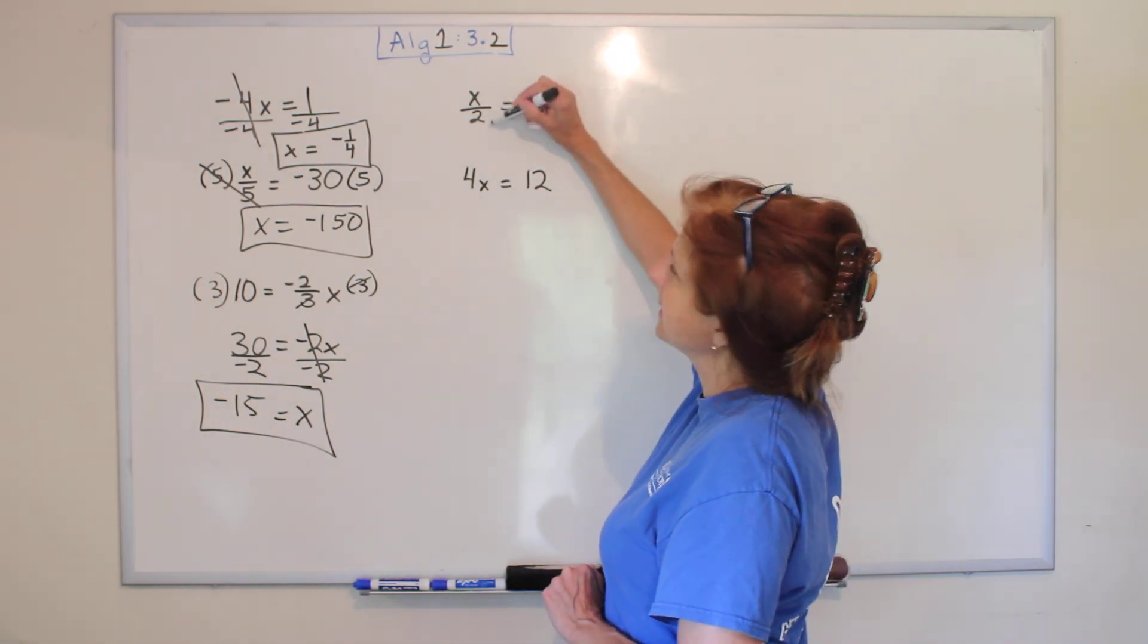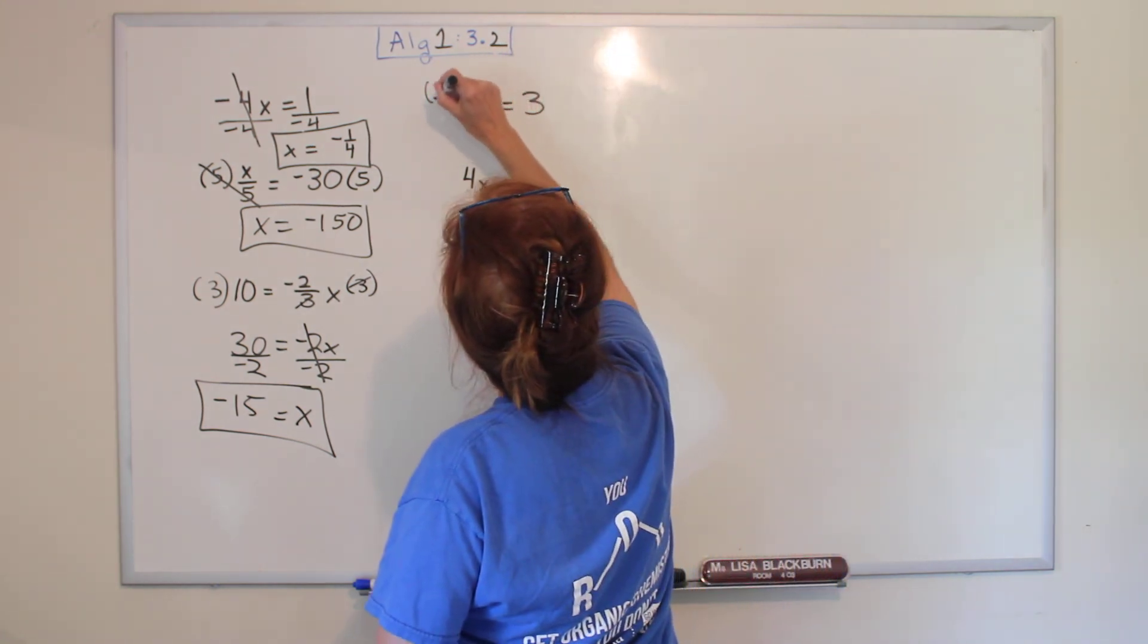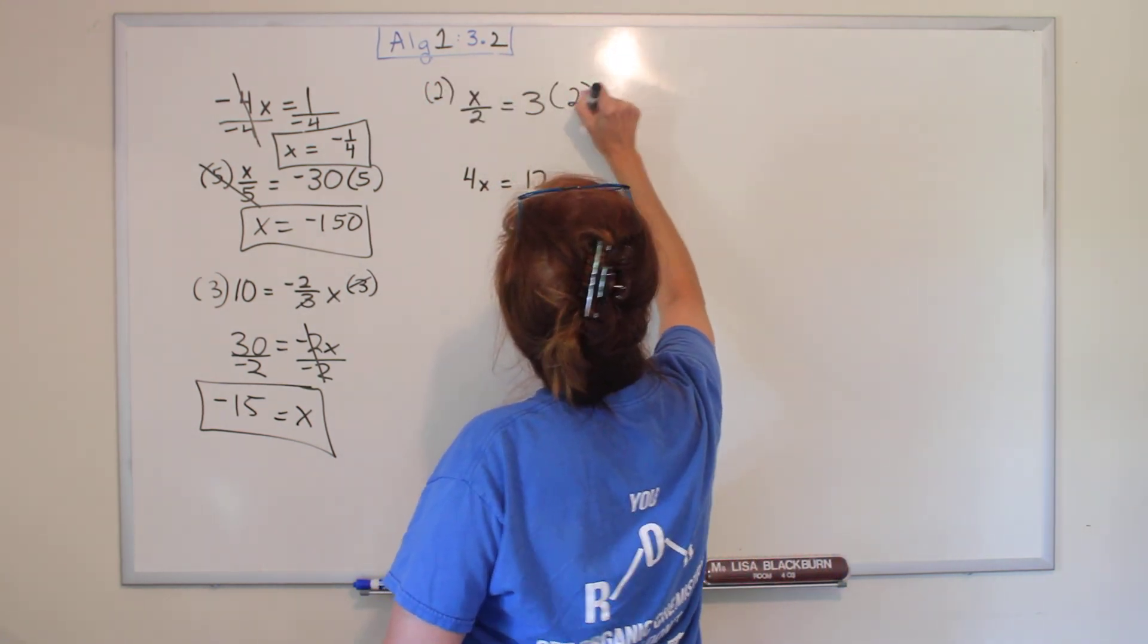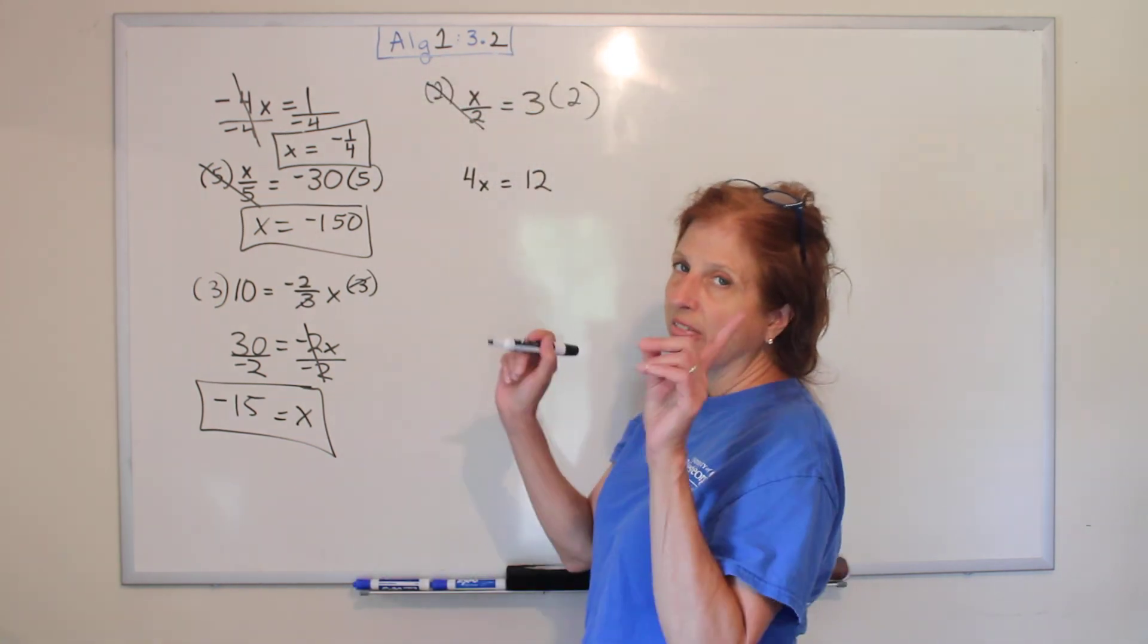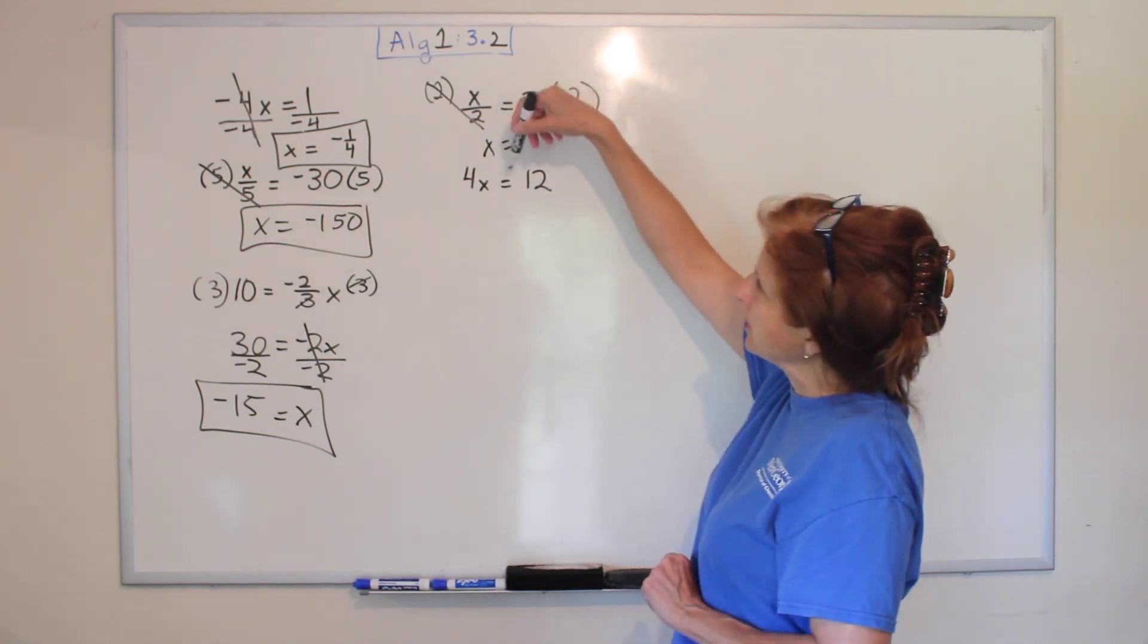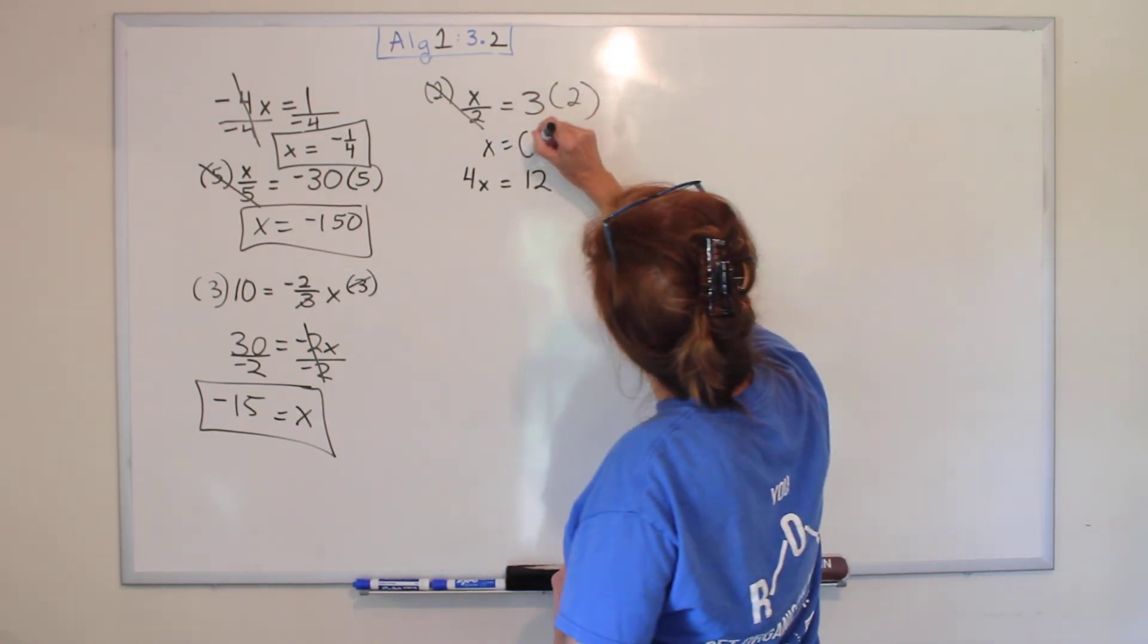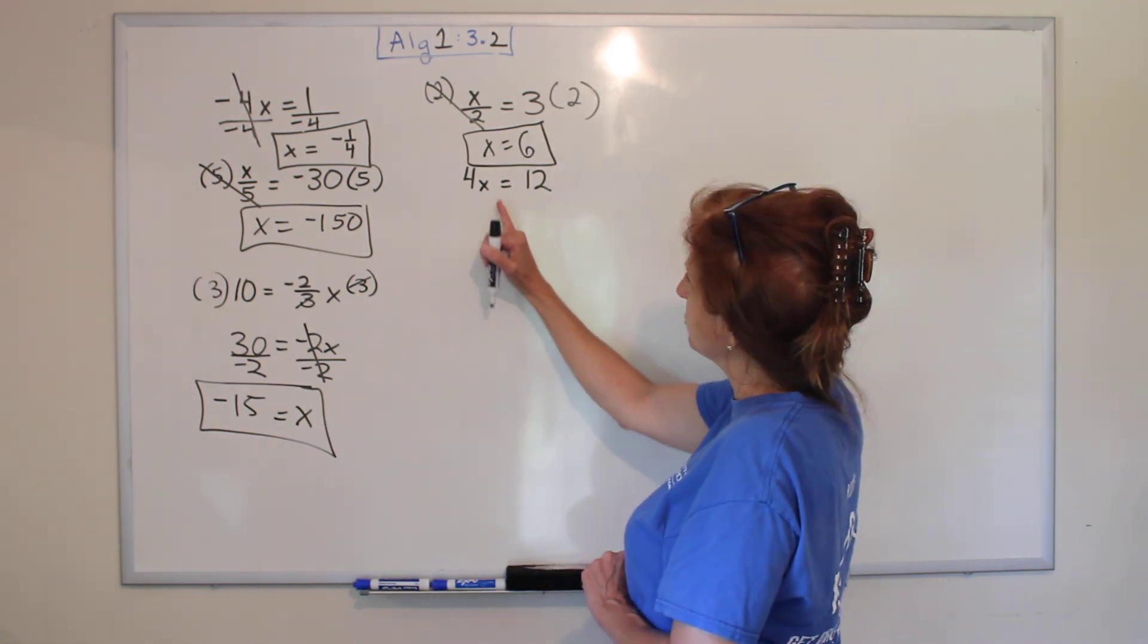Okay, here's an easier one. Why is x not alone? It's being divided by two. So what's the opposite? Multiply by two. What I do to one side, I do to the other. Those cancel out. That's fun. Now, bring down what I didn't mess with. X equals three times two is six. Put a box around your answer.